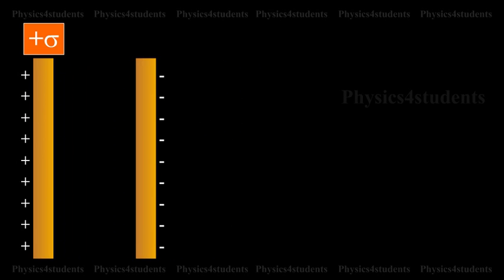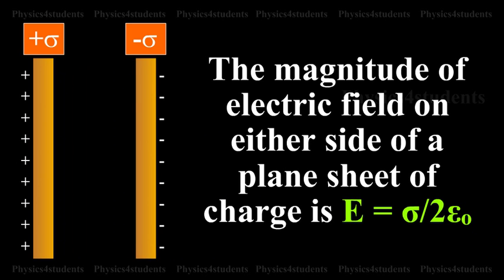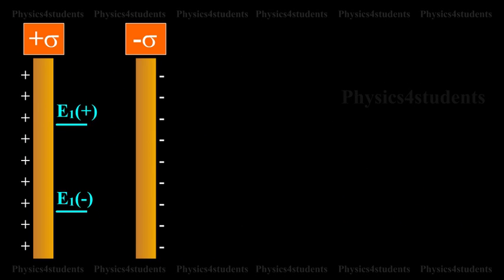plus sigma and minus sigma as shown in the figure. The magnitude of electric field on either side of a plane sheet of charge is E is equal to sigma divided by 2 epsilon naught and acts perpendicular to the sheet directed outward if the charge is positive or inward if the charge is negative.